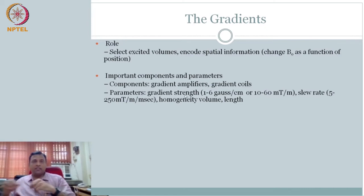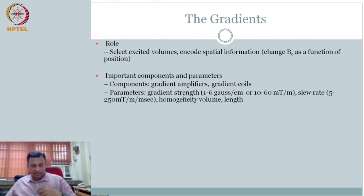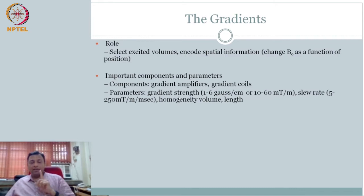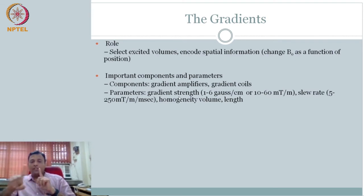What is it that we are changing here? The field strength is what we are changing. So the parameter is gradient strength. Its units have to be magnetic field strength — 1 to 6 Gauss or 10 to 60 millitesla — but change over length, either in centimeters or in SI units, meters. So the parameter is gradient strength: how the magnetic field strength changes with length is one key parameter.